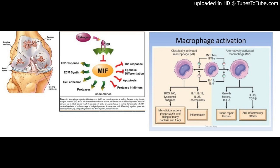Z590 also significantly reduced paw edema, serum levels of TNF-alpha, IL-6, and spleen index in the adjuvant-induced arthritis (AIA) rat model. Furthermore, Z590 markedly ameliorated joint inflammation and articular cartilage damage in the AIA rat model.